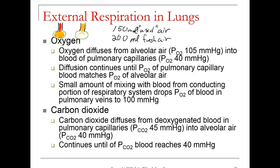That 105 mmHg is still a lot higher pressure than what we see in the deoxygenated blood. Deoxygenated blood isn't completely lacking oxygen — it's just very low oxygen. So we have a pressure gradient of 105 millimeters of mercury partial pressure of oxygen in the alveolar air to 40 millimeters of mercury in the pulmonary capillaries. Diffusion will occur down that pressure gradient until the partial pressure of oxygen in the pulmonary capillary equals the alveolar air at 105 millimeters of mercury.